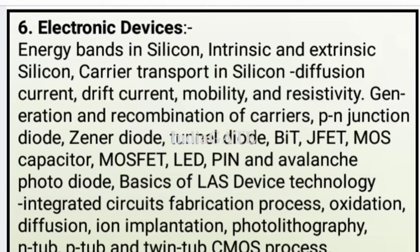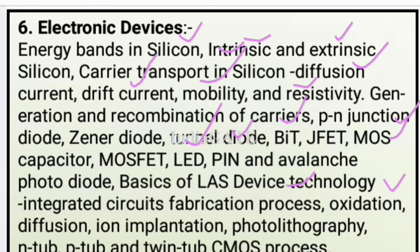The next subject is electronic devices. Important topics are: energy bands in silicon, intrinsic and extrinsic semiconductors, current carrier transport in silicon — diffusion current, drift current, mobility and resistivity, generation and recombination of carriers; p-n junction diode, Zener diode, tunnel diode, BJT, JFET, MOS capacitor, MOSFET, LED, PIN and avalanche photodiode. Also covered are basics of laser devices, integrated circuit fabrication processes — oxidation, diffusion, ion implantation, photolithography, and N-tube, P-tube, twin-tube CMOS process.